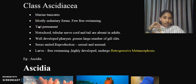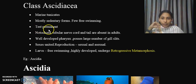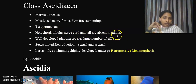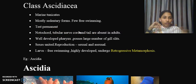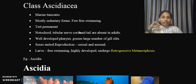They possess a test, also called tunic, which is a protective envelope that is soft, leathery, and translucent in nature. The test is permanent. Notochord, tubular nerve cord, and tail are absent in adults — this is important to remember. In the adult stage you cannot find notochord, tubular nerve cord, or a tail. These are characteristic features of a chordate, present in the larval stage but lost upon entering adulthood.